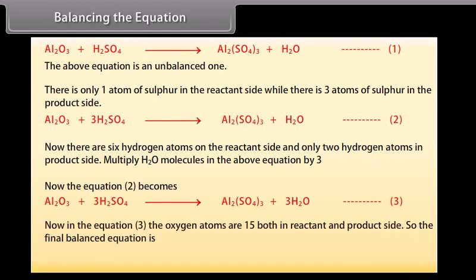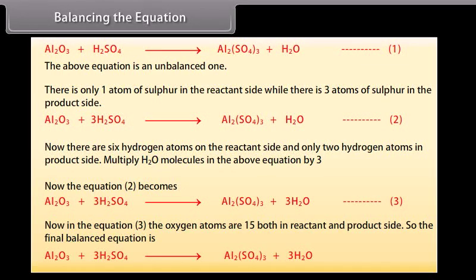In equation 3, the oxygen atoms are 15 on both the reactant and product sides. So the final balanced equation is: Al₂O₃ + 3H₂SO₄ gives Al₂(SO₄)₃ + 3H₂O.